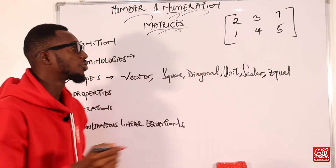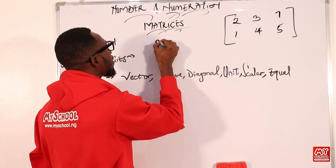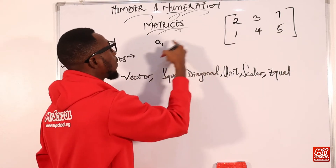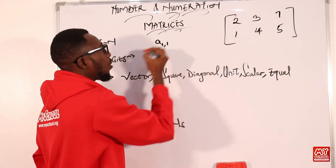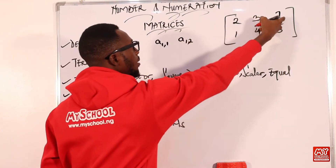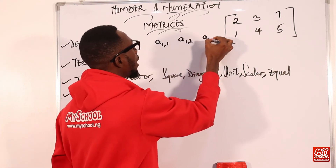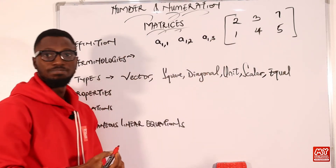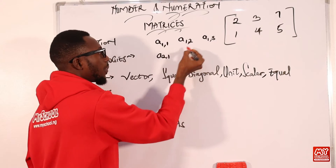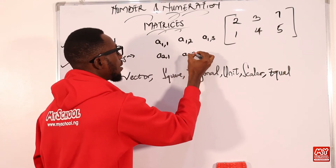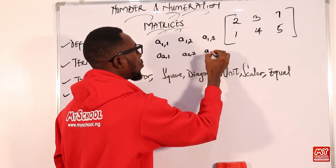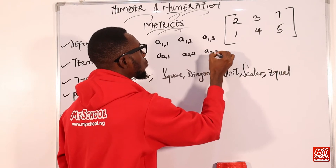For element notation: the first column of the first row, then the first row second column, then seven belongs to the first row and third column. The next ones: the second row first column, the second row second column, and then the second row third column.